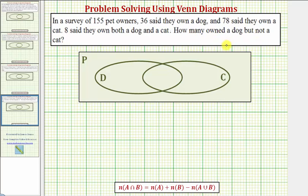We'll solve this problem using a Venn diagram, where set D contains the set of dog owners, set C contains the set of cat owners, and therefore this overlapping region — or the intersection of set D and C — would contain the owners of both a dog and a cat. Set P, the universal set, would be the set of pet owners surveyed. Whenever we refer to the number of elements in a set, this is also called the cardinality of a set.